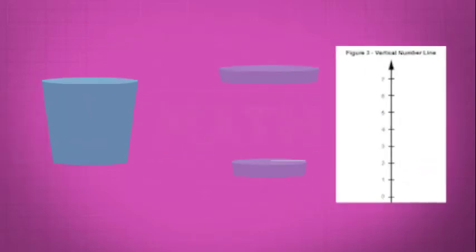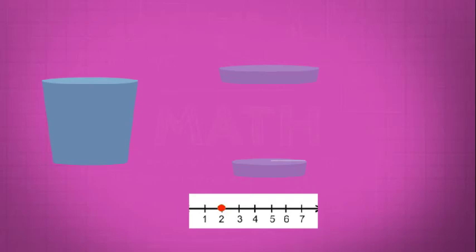More we move towards the top, the value of water contained in the same division increases. Similarly, in a number line, the more we move towards the right, the value of each division increases. Let me put it in another way.